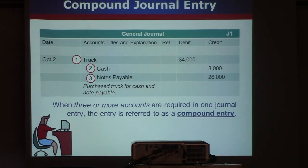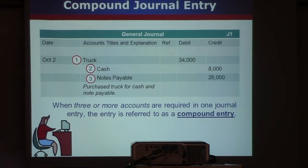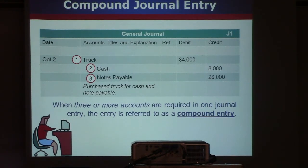Note payable is the same as accounts payable at this point, though as we move along the course, there will be differences between notes payable and accounts payable. In this transaction, a truck is being purchased for $34,000. However, we are only paying $8,000 cash, so credit to cash is only $8,000, and the rest we will pay later. A note payable is an IOU, so the company owes $26,000 which they will pay at a later date. That's why you credit notes payable. Notice debits equal credits, and the accounting equation — assets equals liabilities and equities — is still in balance.